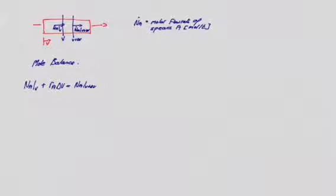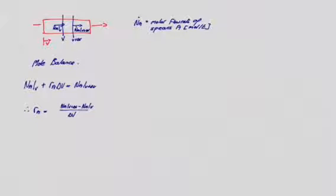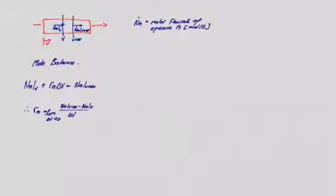We can then rearrange that equation into differential form. The rate of A equals the molar flow rate of A leaving the element minus the molar flow rate entering, divided by the volume of the element. Taking the limit as delta V tends to zero, the right-hand side becomes a differential, and we see that the rate of A equals the rate of change of the molar flow rate of A with respect to volume: r_A = dN_A/dV.